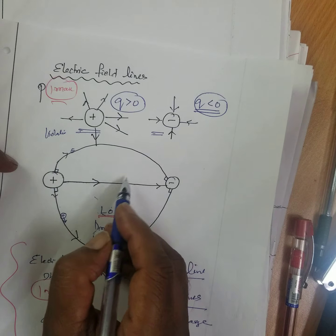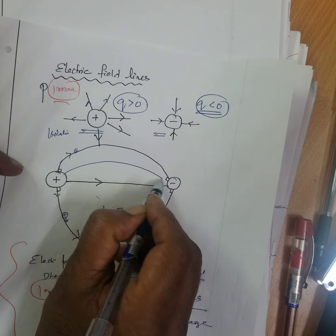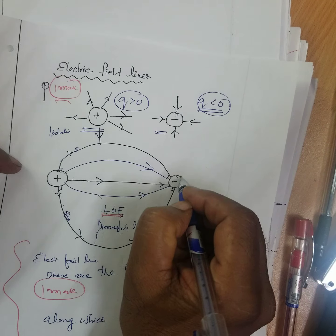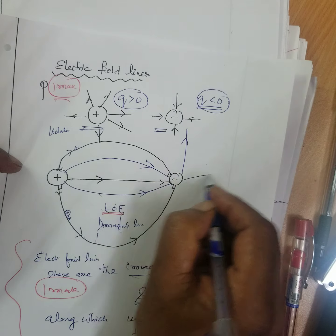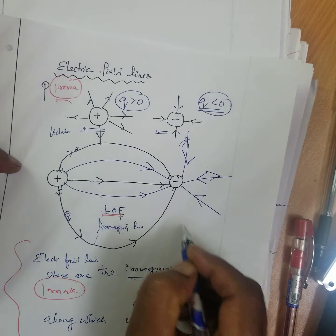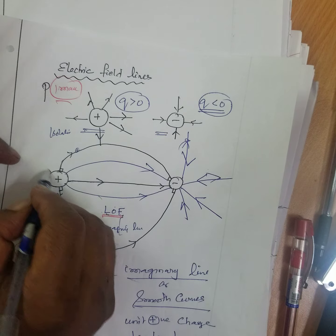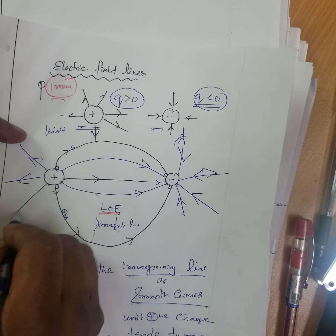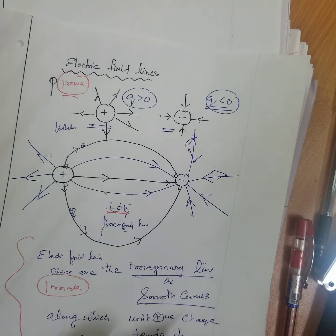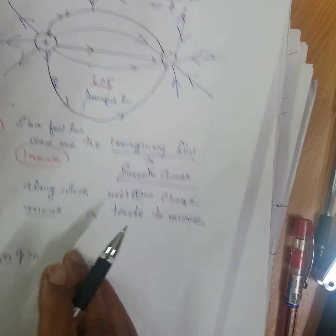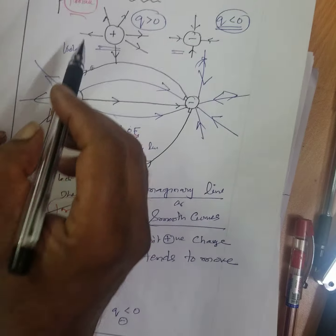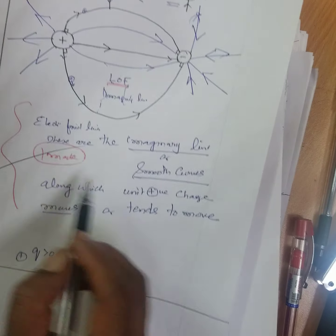For a positive to negative arrangement, lines of force start from positive and end at negative, emerging and coming out from the positive charge. In the examination they will ask you to draw this for one mark, and then ask you about the properties — that is, what are the properties of electric field lines?